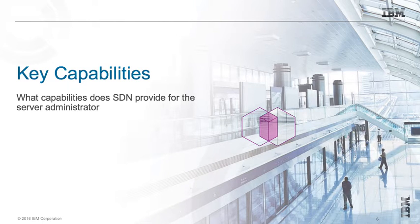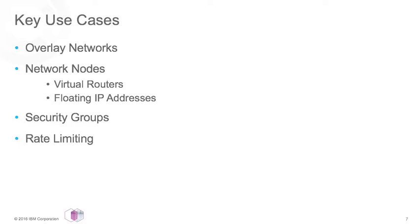Our technical preview focuses on the following aspects: overlay networks, network nodes, security groups, and rate limiting. Each of these can be used independently or together — pick and choose the capabilities that make sense for your environment.